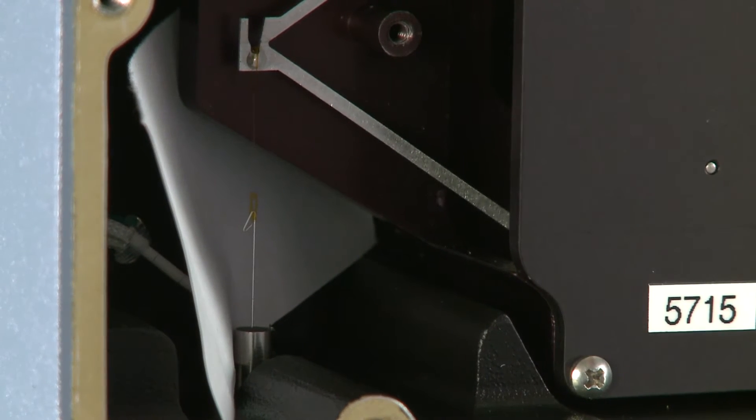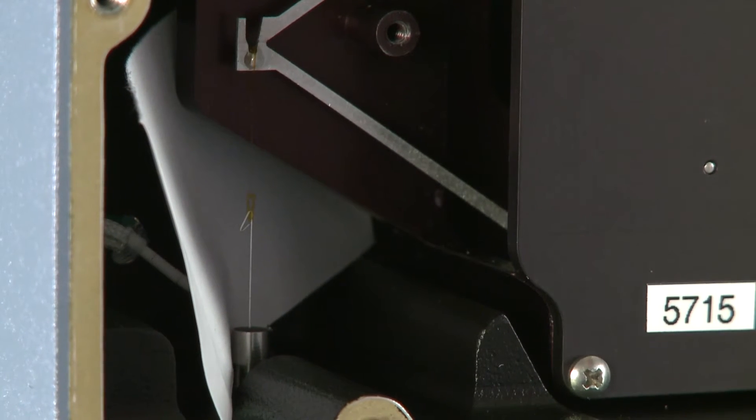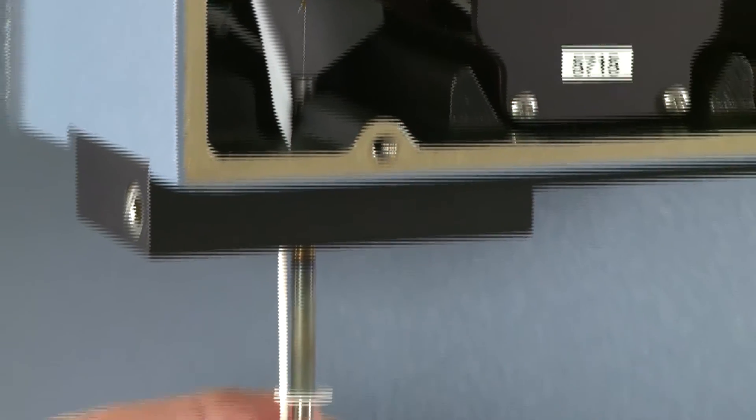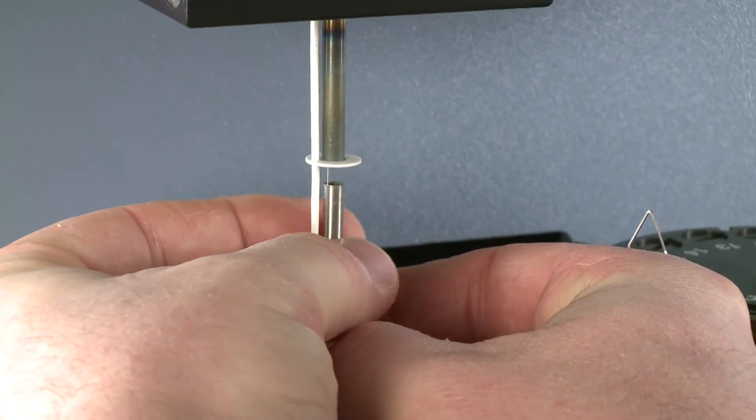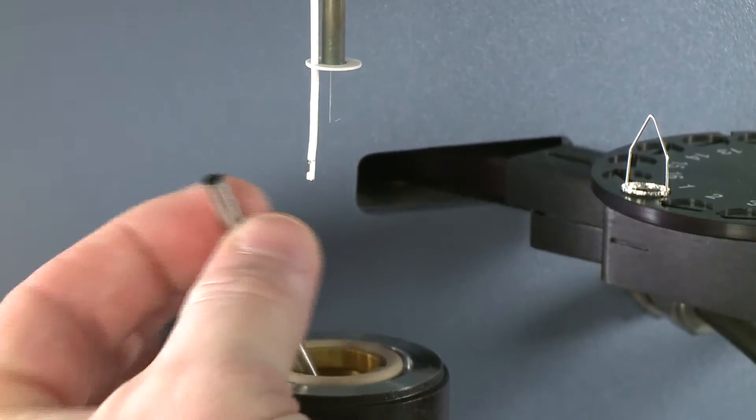Now we've got it in, we can lower our loading tube, making sure that as we get into the bottom, we don't bend the new hang down wire.